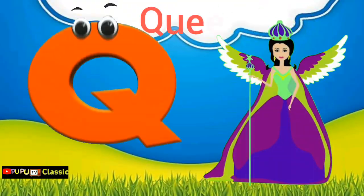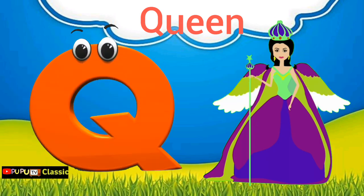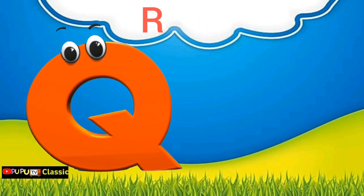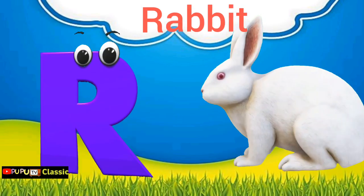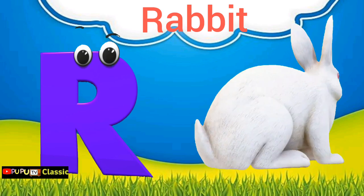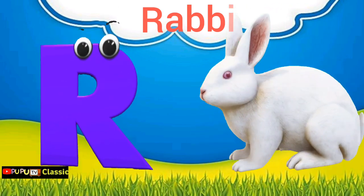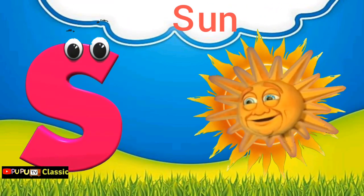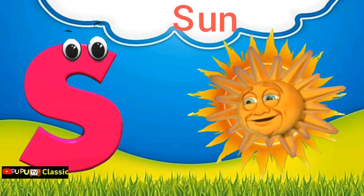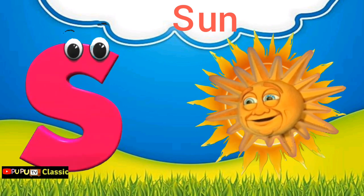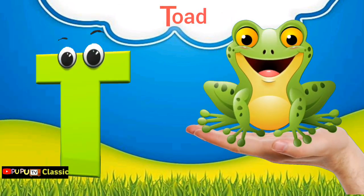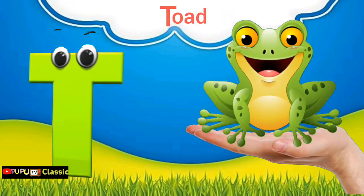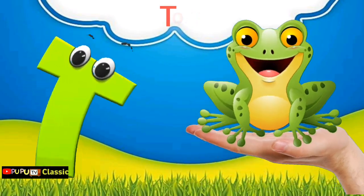Q is for Queen, Q-Q-Queen. R is for Rabbit, R-R-R-Rabbit. S is for Sun, S-S-Sun. T is for Toad, T-T-Toad.